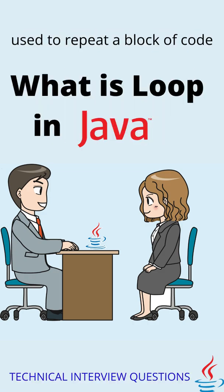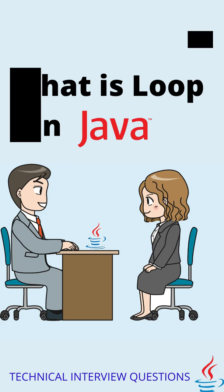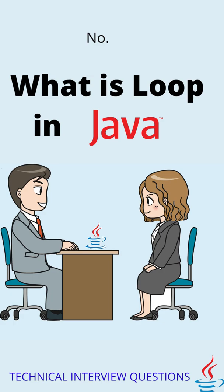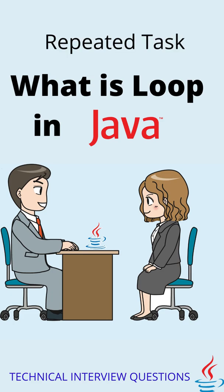What is a loop in Java? Loops are used to repeat a block of code. For example, if the question is to print 'Hello World' three times, you can use System.out.println. But if the question is to print 'Hello World' 1000 times, will you follow the same approach? No. Basically, there are some particular tasks we have to do again and again — to do that, we use a loop.